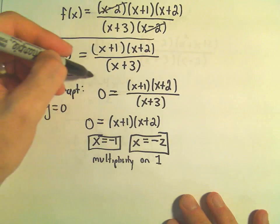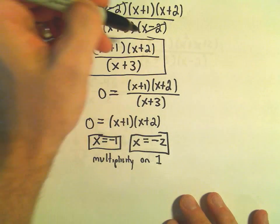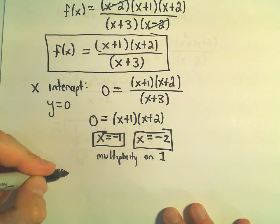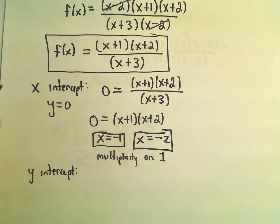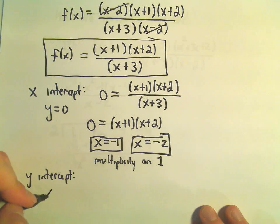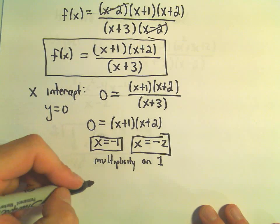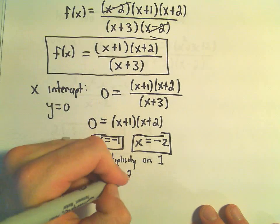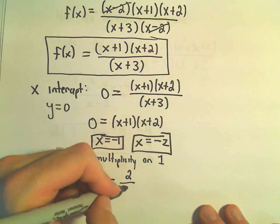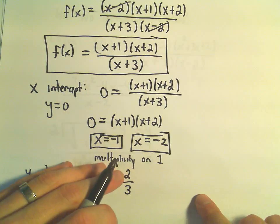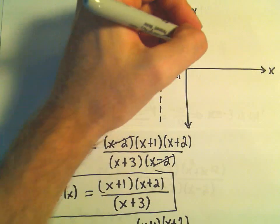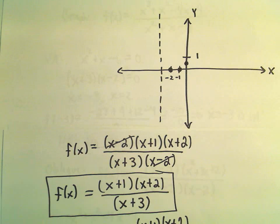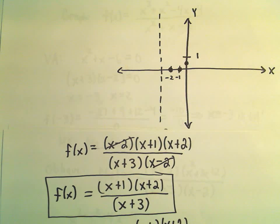From the simplified formula I'll also find the y-intercept by plugging in x equals 0. We get 1 times 2 over 3, which is 2 thirds. So the y-intercept is 2 thirds — somewhere just above the x-axis near the origin.